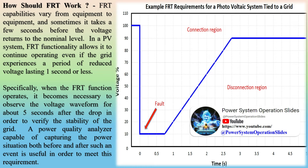If one phase touches another phase, it causes a line-to-line (LL) fault. About 15% of all faults are LL faults. The LL fault causes IB = 0, IC = 0, VB = 0, and VCE = 0.